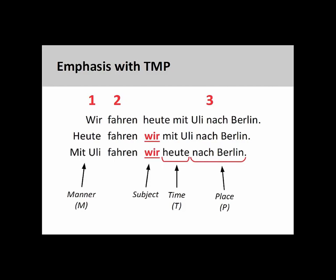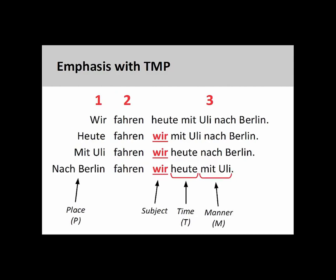Less common, although possible, is to place the manner element in the first position. As before, the other time and place elements remain in the third position in the regular order, and the subject of the sentence again appears immediately after the verb. It is also possible for the place element to appear in the first position, with the time and manner elements remaining in the third position in the regular order. The subject again appears immediately after the verb.